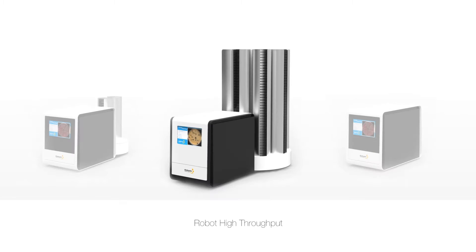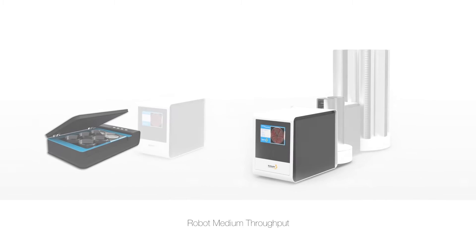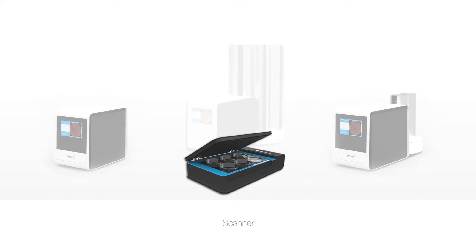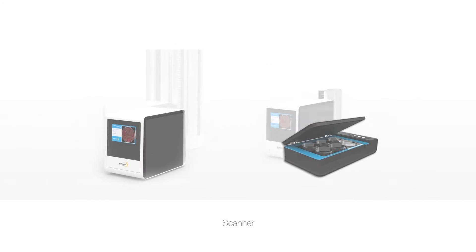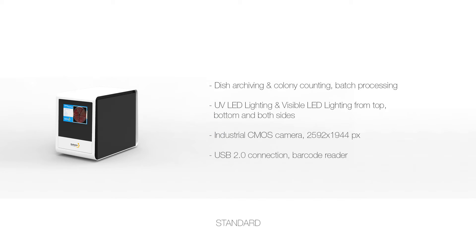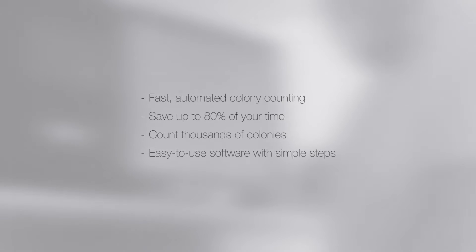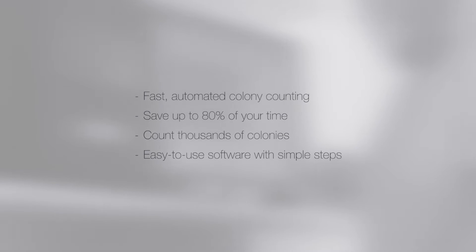BioVendor is proud to offer the following instruments for colony counting: robot high throughput, robot medium throughput, scanner, and standard. Colony counting with high resolution industrial standard provides dish archiving, colony counting, batch processing, and much more. Fast automated colony counting saves up to 80% of your time, and you can count thousands of colonies with easy-to-use software in simple steps.